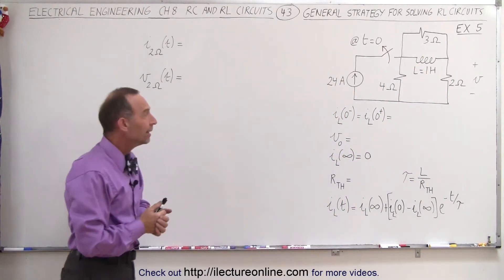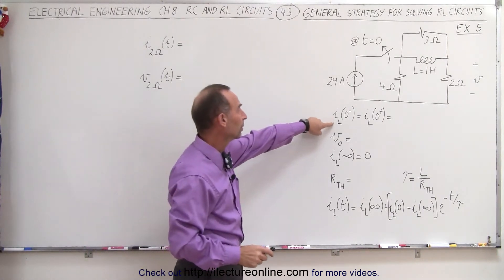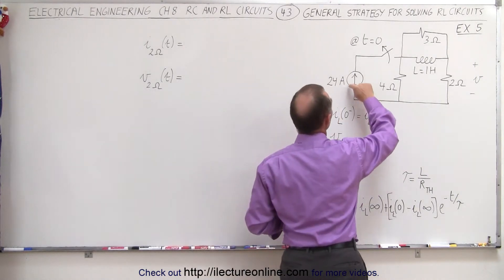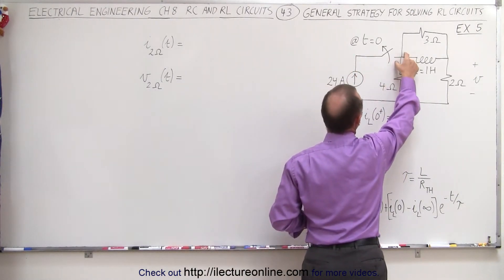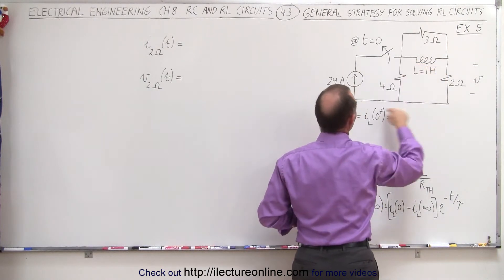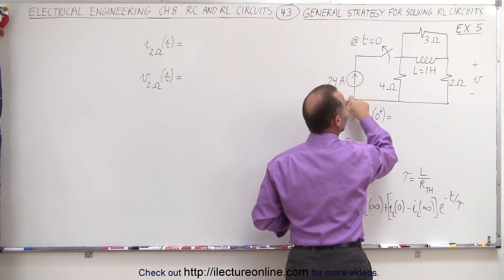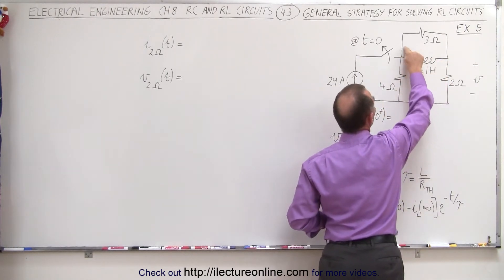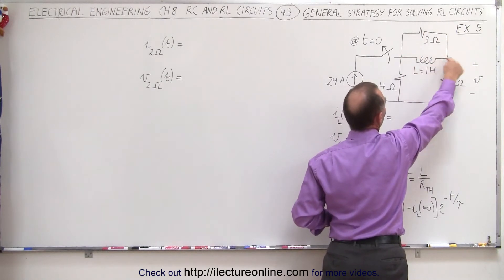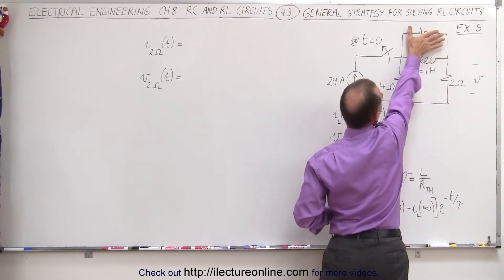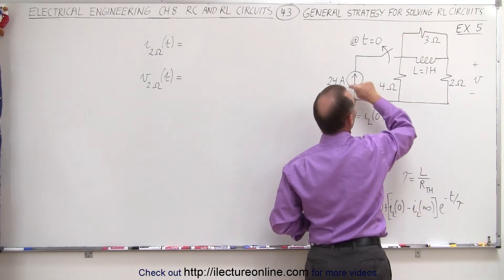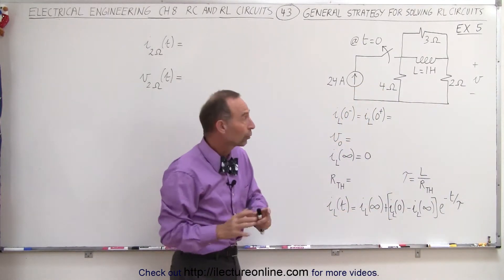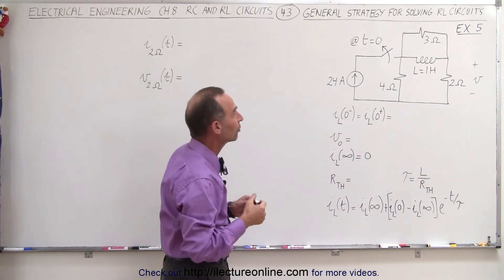So how do we begin? Let's start again with finding the current through the inductor before the switch opens up. Before the switch opens up, we have 24 amps coming through here. We get to the junction right here, and notice that to get back to its original position, we need to go through the inductor and this resistor. No current will flow through the 3-ohm resistor because this is essentially a short circuit, which eliminates the 3-ohm resistor from the circuit before the switch opens up. So all the current either goes through the 4-ohm resistor or the 2-ohm resistor, and the current going through the 2-ohm resistor is the same as the current going through the inductor.